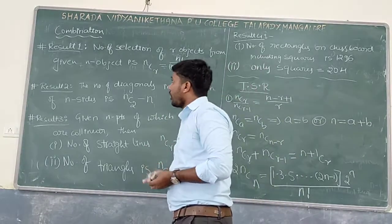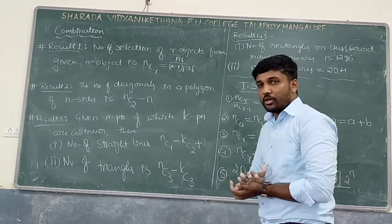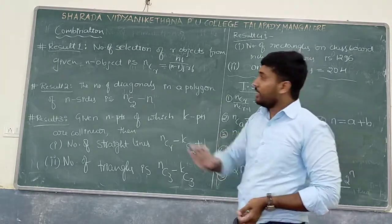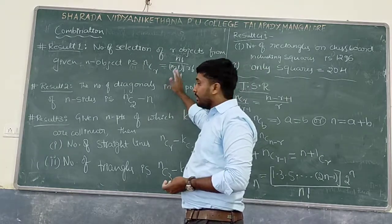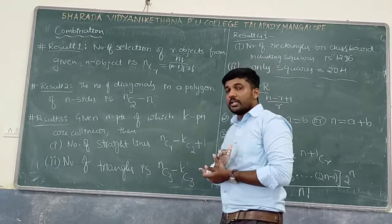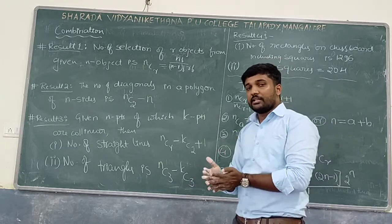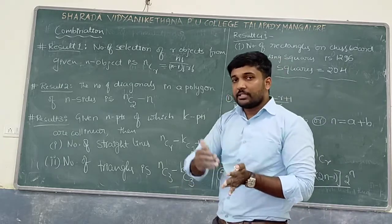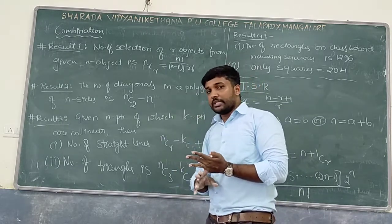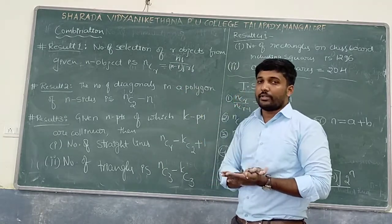Next is about combination. The first result related to combination: the number of selections of r objects from n objects is denoted by nCr. It equals n factorial divided by (n−r)! × r!. The difference between nPr and nCr: nPr involves selection and arrangement, whereas nCr is just the selection of r objects out of n objects.